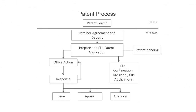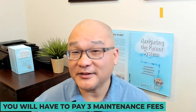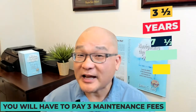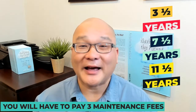We go through this loop for a few months. If the examiner maintains a rejection, you may decide to abandon the application. Alternatively, we can appeal the decision to the appeals board. If successful, the patent office will grant you a patent. You have to pay three maintenance fees — at three and a half years, seven and a half years, and eleven and a half years after the patent grant — to keep the patent alive.